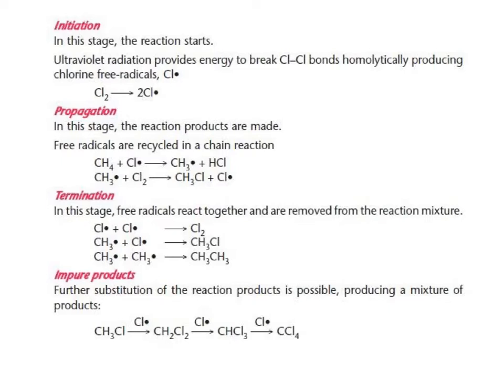And what's interesting as well is that you can get further substitution of reaction products. So in the termination stage, you can see that we've made CH3Cl and we've also made CH3CH3, chloromethane and ethane. Both of these are susceptible to further attack in exactly the same way by leftover chlorine radicals. And this quite often is what happens if the reaction is allowed to just go by itself.